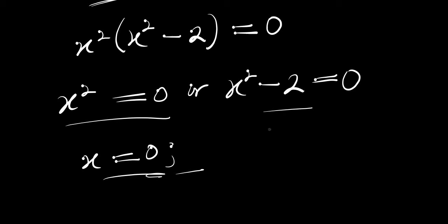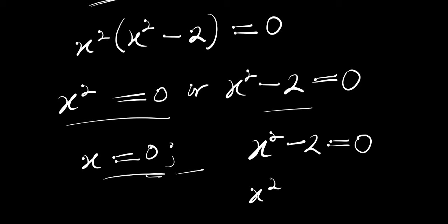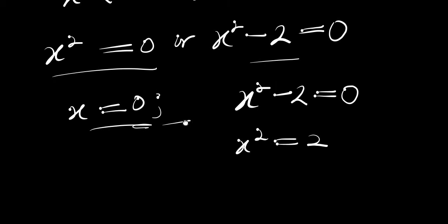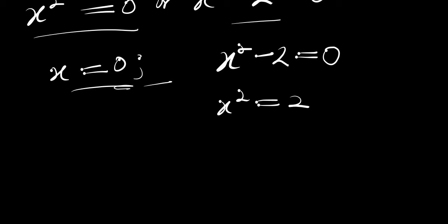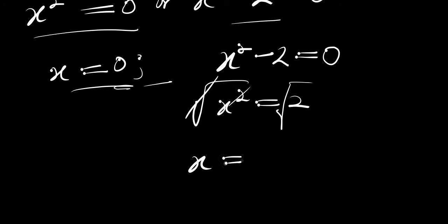Now let's solve the second equation: x squared minus 2 equals 0. From here we have x squared equals 2. At this point we can take the square root of both sides. The square root cancels the square, so we have x equals plus or minus root of 2.